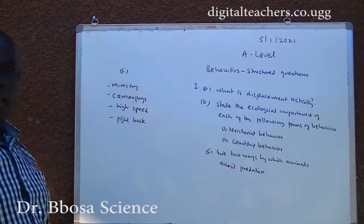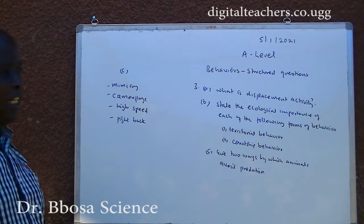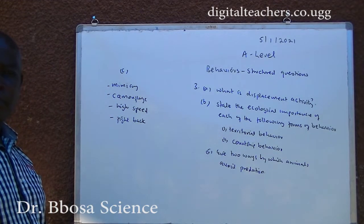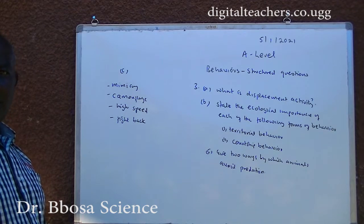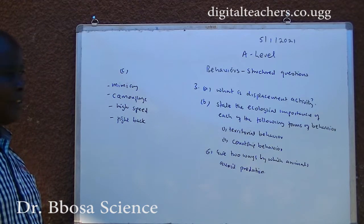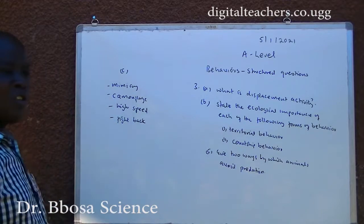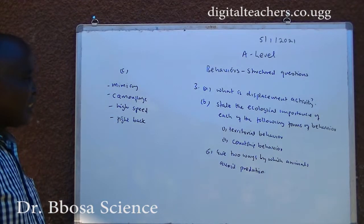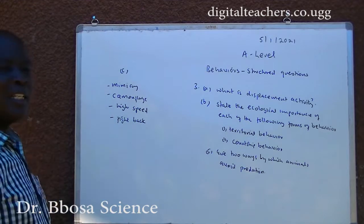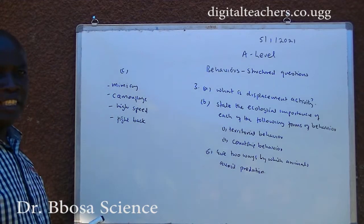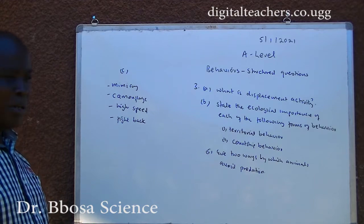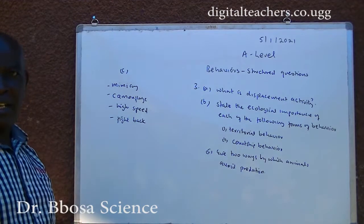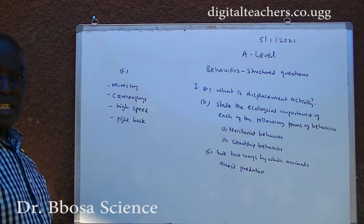C. Ways of avoiding predation include: looking like a dangerous organism (mimicry), camouflage — looking like the environment and concealing yourself in the environment, high speed — taking off as fast as you can from the predator, or fighting back against the predator.